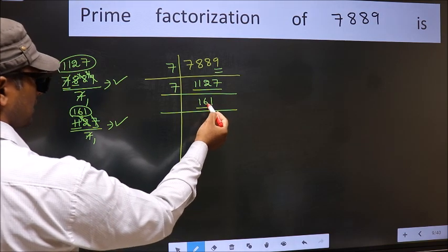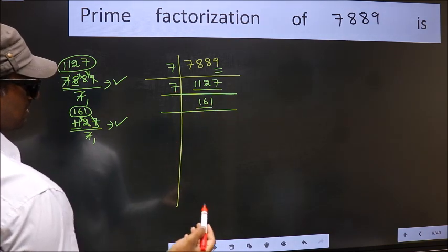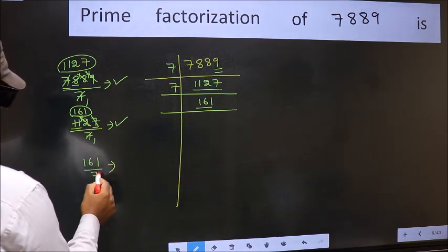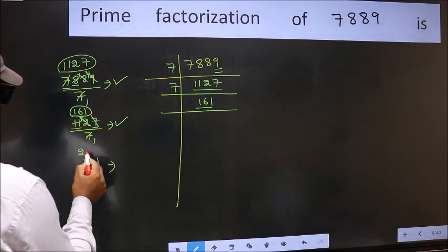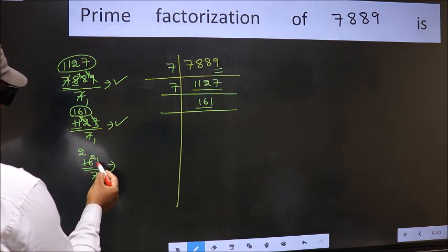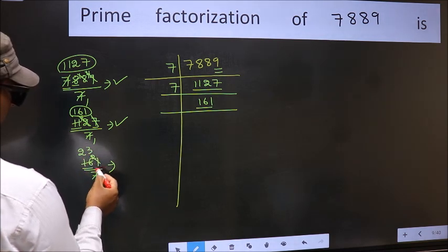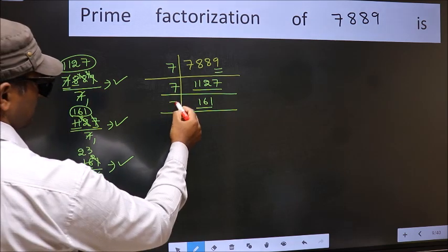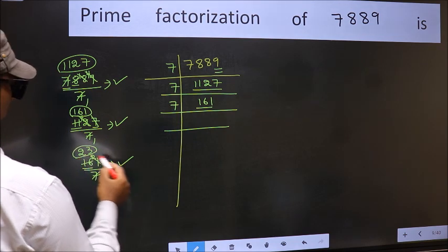Even for 161, we start checking divisibility from 7 onwards. A number close to 16 in the 7 table is 7 times 2 = 14. 16 minus 14 = 2, carried forward gives 21. 7 times 3 = 21 — no number has been left out, so this is divisible by 7. So 7 here, and here we write the number 23.